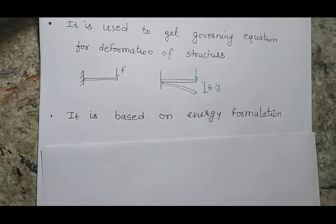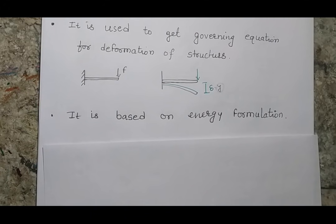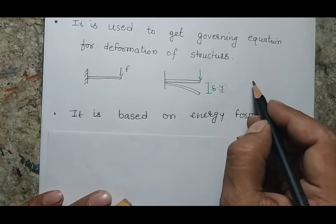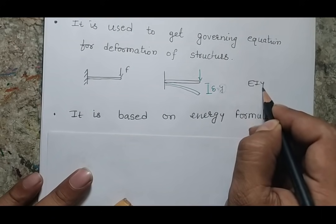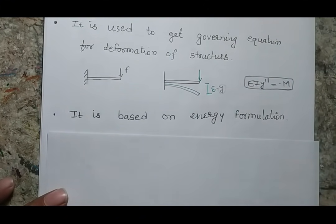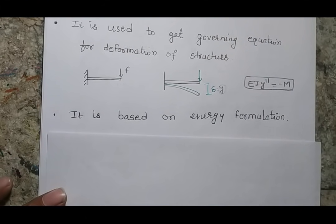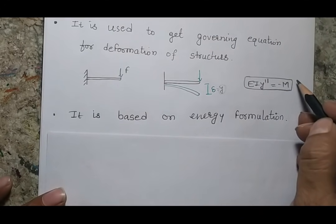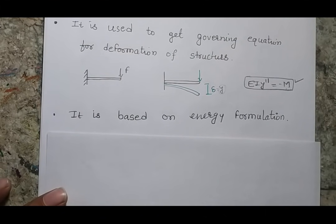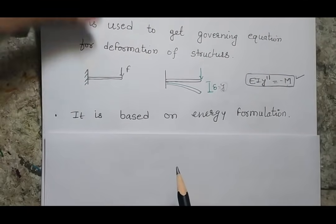The principle of virtual work is basically based on energy formulation, where instead of applying force balance we apply some energy logic and then find the deflection or the governing equation for deflection. For example, in the cantilevered case, the deflection is defined by the governing equation EI y double-dash equals minus M. In the first year engineering mechanics course you won't see this equation, but mechanical engineering students will study it in solid mechanics. This principle is based on the energy principle.